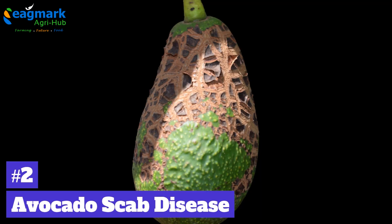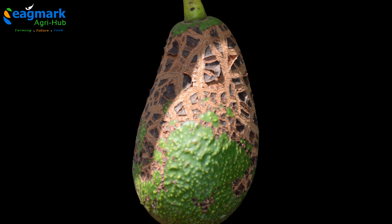Number 2: Avocado Scab Disease. It is caused by the fungus Phacidiopycnis perseae. Avocado Scab Disease causes lesions on fruits that appear as little dark patches that are slightly elevated, giving the fruit's surface a corky look.